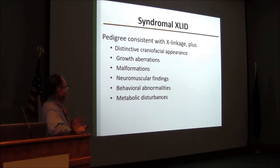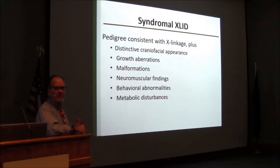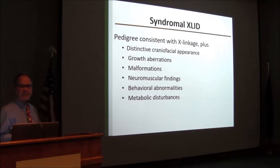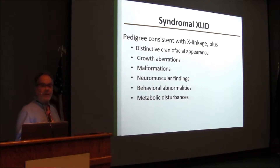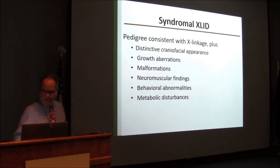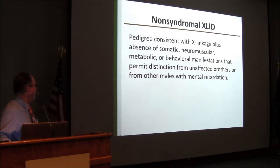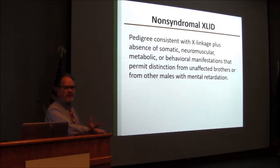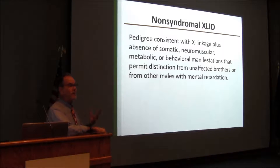We decided as a group to delineate X-linked ID into two subpopulations. One would be syndromal X-linked ID — a pedigree with X-linked inheritance that had either distinctive craniofacial appearance, growth aberrations such as tall or short stature, malformations, neuromuscular findings, behavioral abnormalities, or metabolic disturbances — something that would distinguish the affected male in the family from unaffected siblings or the general population. The other would be non-syndromal X-linked ID families: those with a clear indication of X inheritance but no other findings in the affected males to separate them from their siblings or anyone else in the population.